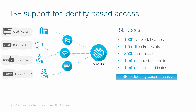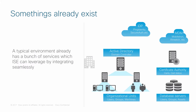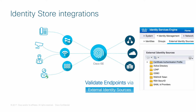That's quite a lot what ICE can deliver. However, when we look at enterprises today, they do have some infrastructure running that already has some of these identity sources — like a directory service such as Microsoft Active Directory or an LDAP server, ODBC servers hosting user and device accounts, a PKI infrastructure to manage certificates, and mobile device managers and identity providers for single sign-on. The good news is ICE can seamlessly integrate with all those external identity stores and deliver network access control.